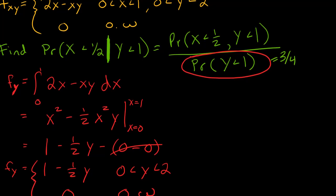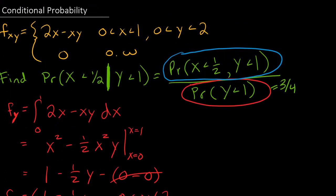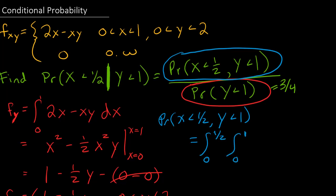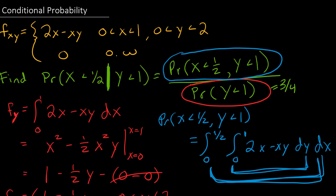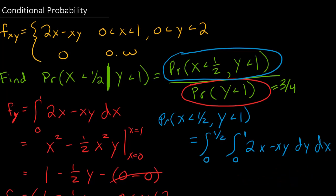Now to figure out the numerator — the probability that x is less than 1 half and y is less than 1 — I need to integrate. x goes from 0 to 1 half, and y goes from 0 to 1, over the joint distribution 2x minus xy. Make sure the order of integration matches: dy is the inner integral (y from 0 to 1), and dx is the outer integral (x from 0 to 1 half). It's very important that the order of integration matches the bounds.